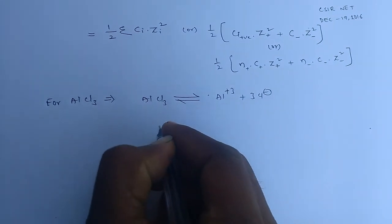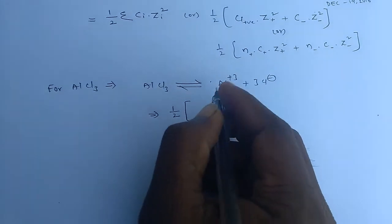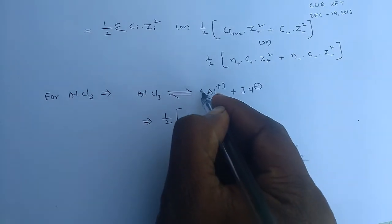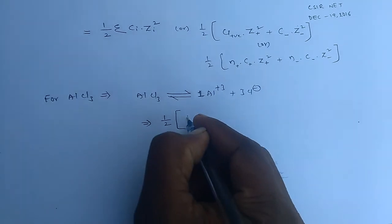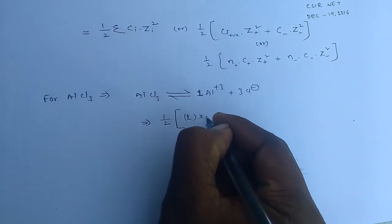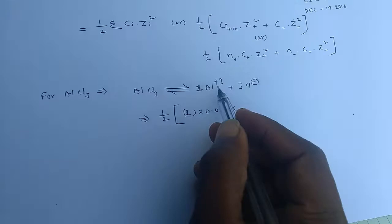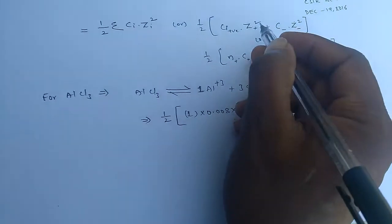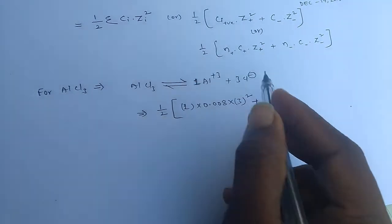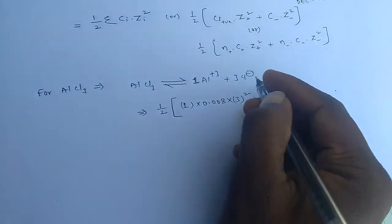Half into number of cations - how many number of cations are there in this equation? Only 1 Al³⁺. So that's why 1 into concentration of aluminum plus 3 is 0.008 into valency of aluminum plus 3 is 3, and that should be square, plus